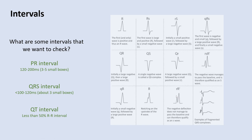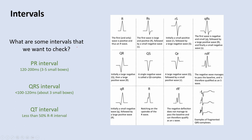A note on QRS nomenclature: whatever the biggest wave is gets capitalized. The first negative deflection is called the Q wave, the first positive deflection is the R wave, and if there's another deflection after an R wave, it's called the S wave. If there's a second R wave, it's called R-prime. So you can have combinations like a little R and a big S, an RSR-prime pattern, or a little Q and a big R.